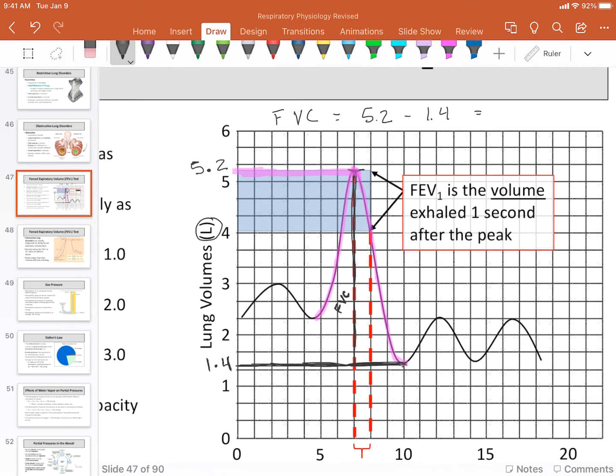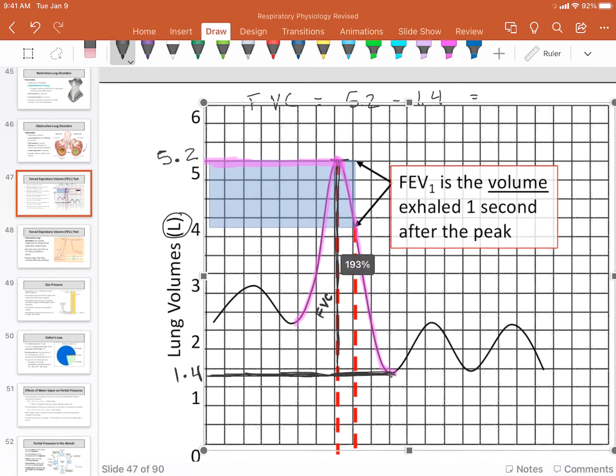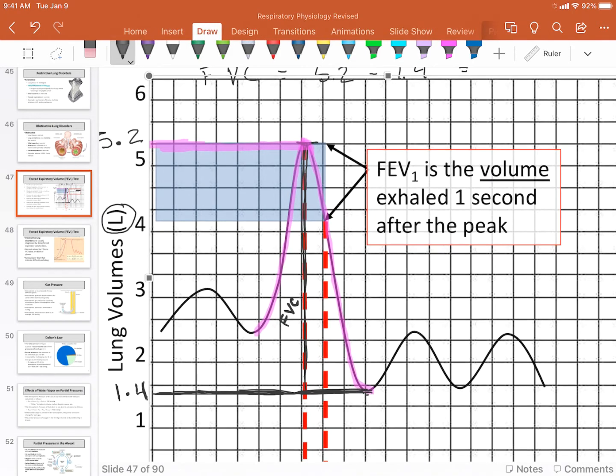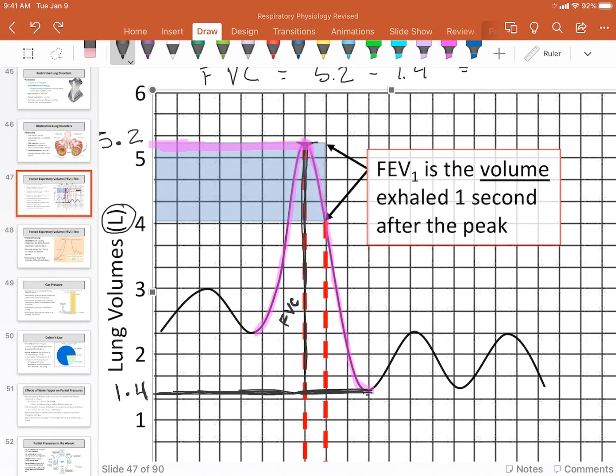And so my vital capacity then is the difference between those two numbers. The forced vital capacity is going to be used in your calculations, but let's zero in on what a forced expiratory volume is. The expiratory volume is essentially how much air you can exhale.